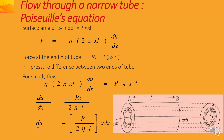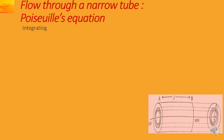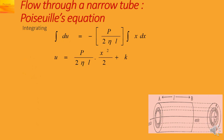This is rewritten as du equal to minus P upon 2 eta L into x dx, with dx taken to the other side. Integrating both sides — integration of du is u, and integration of x dx is x squared upon 2 — gives u equal to minus P upon 2 eta L into x squared upon 2 plus k, the constant of integration.